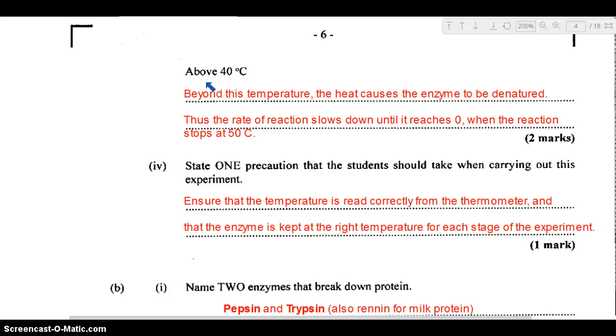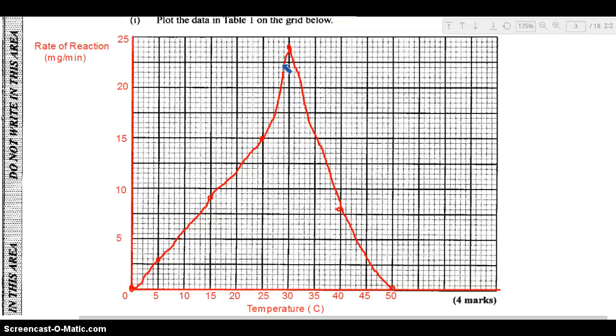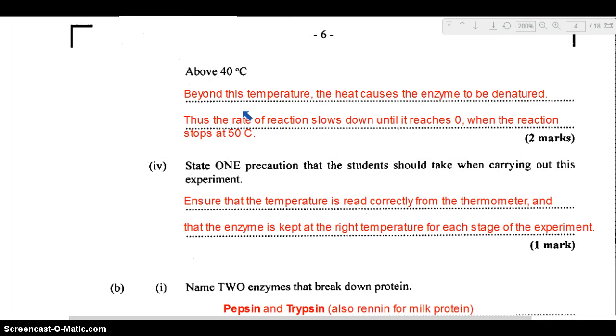Now we have to account for the shape of the graph above 40 degrees Celsius. Beyond the point of 40 degrees Celsius, you can see there is a rapid decline in the rate of reaction right down to 50 degrees Celsius. Beyond this 40 degrees Celsius, the heat is going to cause the enzyme to be denatured. Too much heat can cause the enzyme to be denatured, so the shape of the enzyme becomes unraveled and it's destroyed and cannot function as it should. The rate of reaction will therefore slow down until it reaches zero when the reaction stops completely at 50 degrees Celsius.